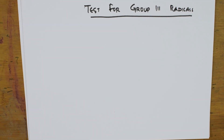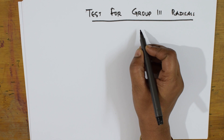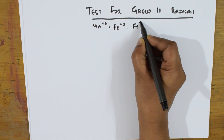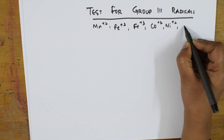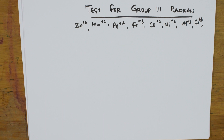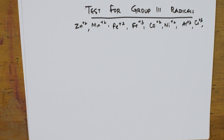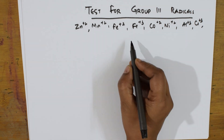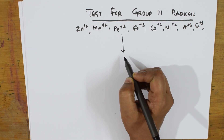Welcome back students. Let us start with the analysis of Group 3 basic radicals. So far we have seen zero group, first group, and second group. Now let us see the flow chart for Group 3. The cations present in Group 3 are Mn²⁺, Fe²⁺, Fe³⁺, Co²⁺, Ni²⁺, Al³⁺, Cr³⁺, and Zn²⁺. The group reagent for Group 3 is ammonium hydroxide and ammonium chloride.